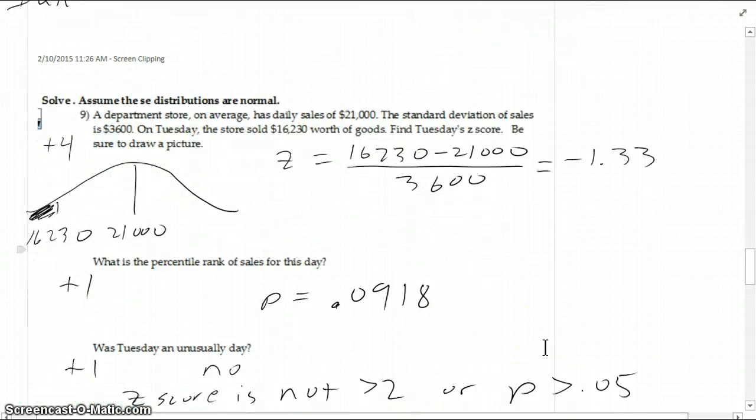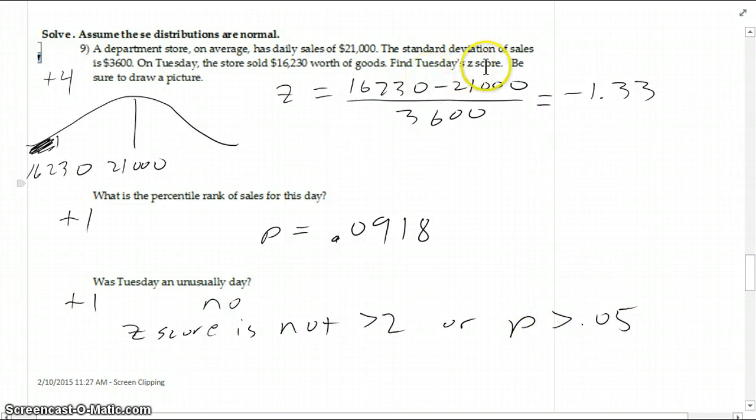Number nine. These are z-scores. So I said draw a picture. Draw the normal distribution. Put the mean in the middle. Put the 16,230. So if we calculate that z-score, it's negative 1.33. So it's 1.33 standard deviations below normal. If you look up negative 1.33 on your z-table, you're going to get .0918. And so that's pretty straightforward. So about a 9% chance that you would get this by random chance. And then was it unusual? The answer is no. Usually our guideline is that needs to be less than 5% or more than two standard deviations below normal, and it's neither of those things.